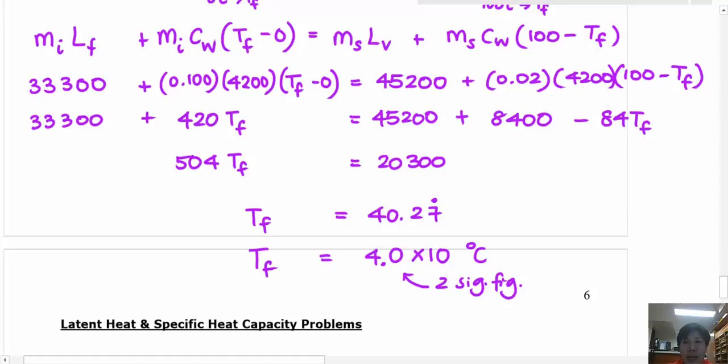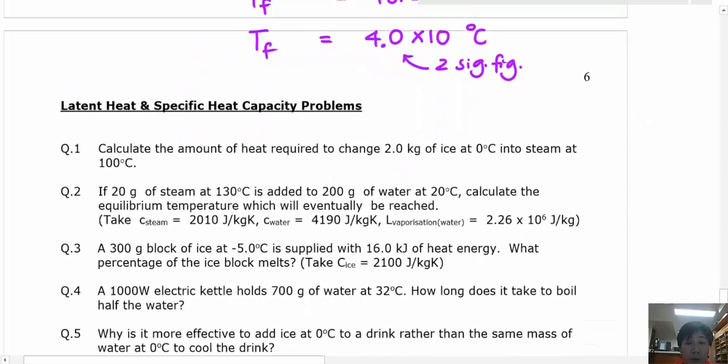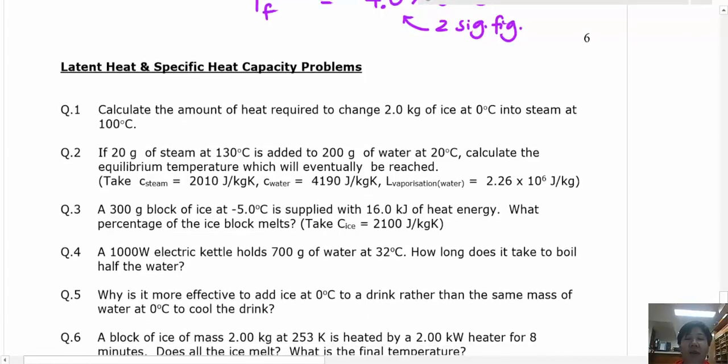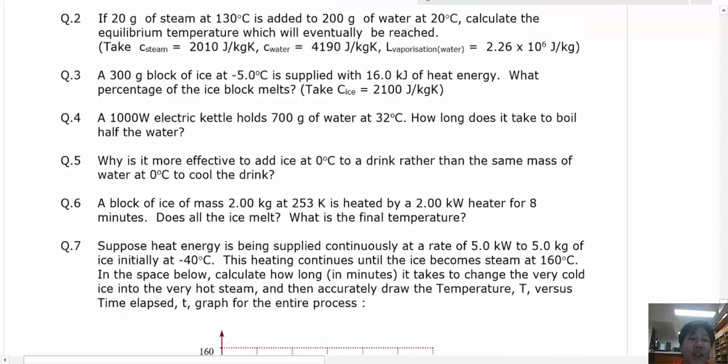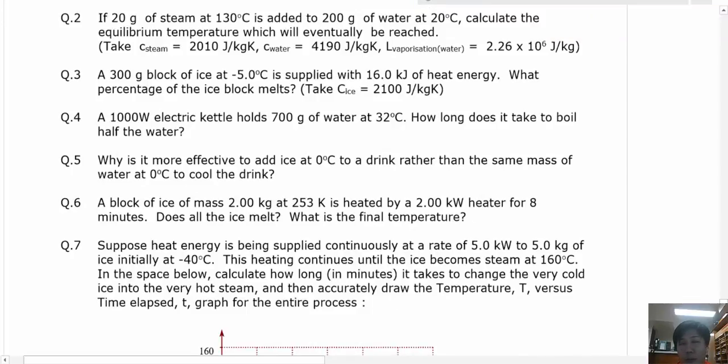I hope this helps you because your homework tonight is actually having a go at questions one to four on page six. These are easy questions of specific heat and latent heat capacity problems. If you would like to challenge yourself, you can start from the bottom up and do problems question seven, six, five, four. Just be aware that question seven is super-duper A-plus standard, so be ready for that. Thank you very much, and I hope to see you tomorrow with all your homework done.